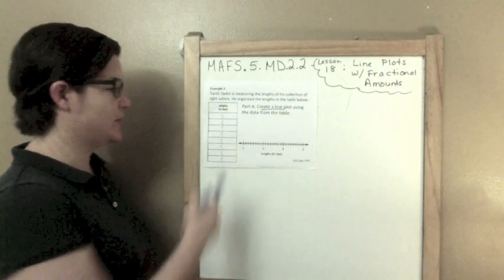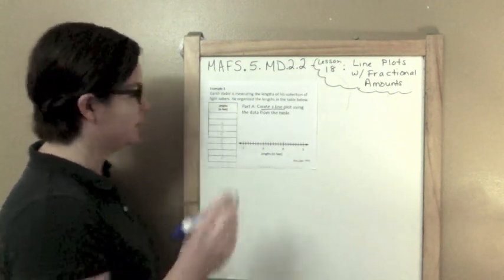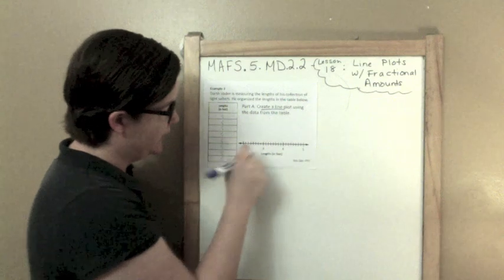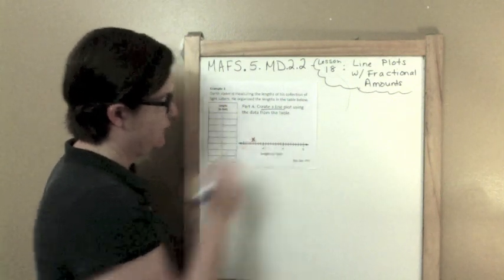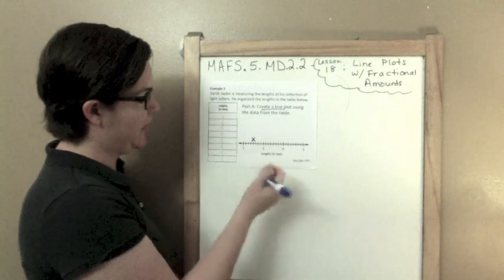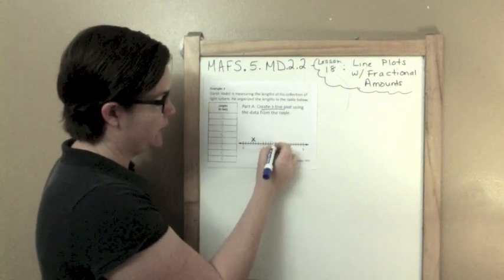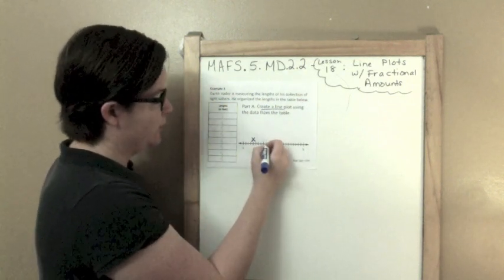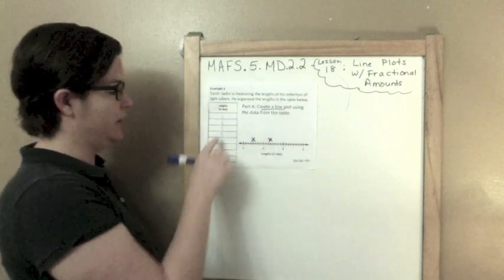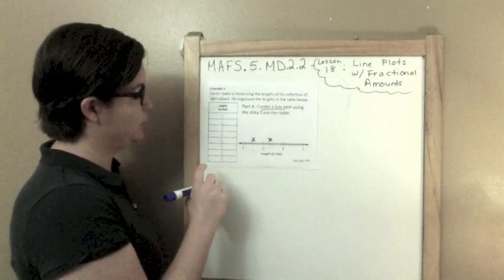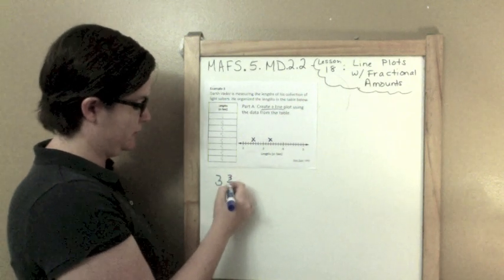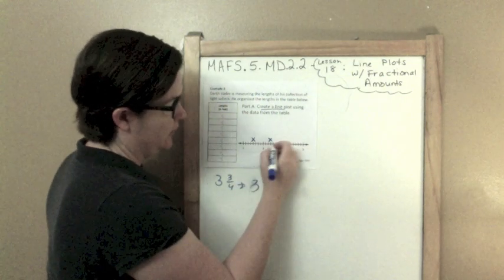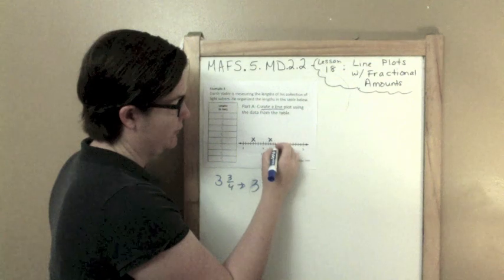What we need to do is create a line plot using the data from the table. So this one says 2 and a half, I'm going to go to 2, it's halfway between the 2 and the 3, I'm going to put an X. 3 and 3 eighths. Well, each whole is broken into 8ths, so I go to the 3, 1, 2, 3 eighths, put an X.